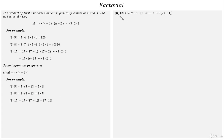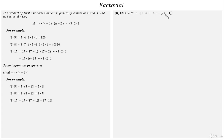Property number 2: factorial 2n equals 2 raised to n into factorial n into 1 into 3 into 5 into 7 till (2n-1).